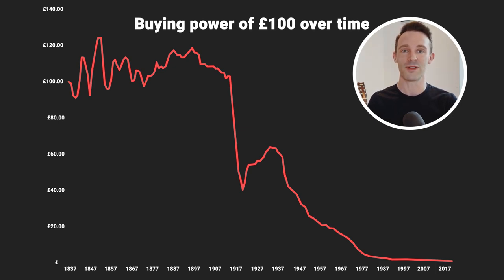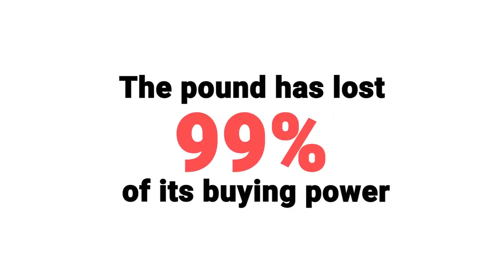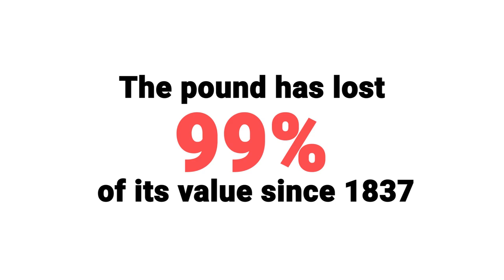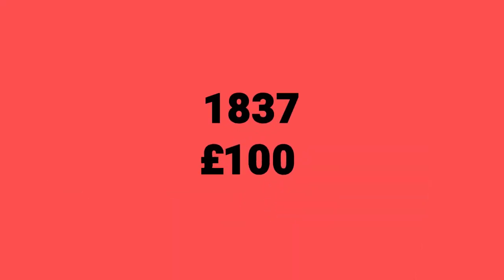But from then onwards the decline is absolutely enormous. The end result is that the pound has lost 99% of its buying power — 99% of its value — since 1837. In other words, the amount of money that would have bought you £100 worth of goods in 1837 would buy you 87 pence worth today. Absolutely incredible.